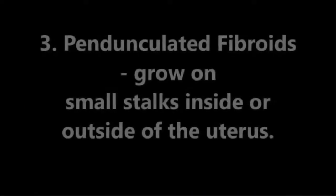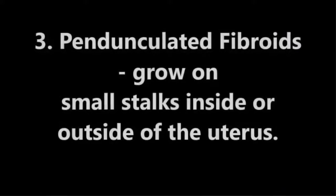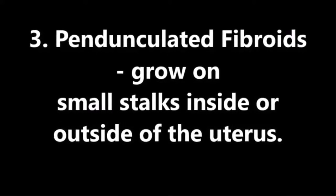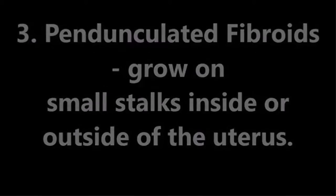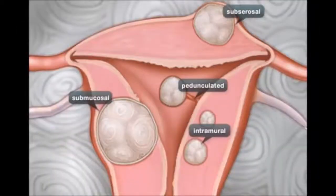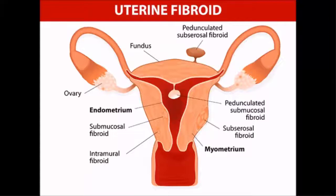Third, pedunculated fibroids. These grow on small stalks inside or outside of the uterus. From this diagram, you can see an example of the pedunculated fibroid. As we can see from the diagram, a pedunculated fibroid could be a subserosal or a submucosal fibroid that has grown on a stalk.